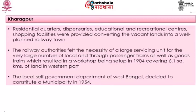One of the earlier IITs — Indian Institute of Technology — was set up in Kharagpur on an area of about 500 hectares, located five kilometers away from the railway station. This was followed by the local self-government department of West Bengal forming the municipality of Kharagpur in 1954.